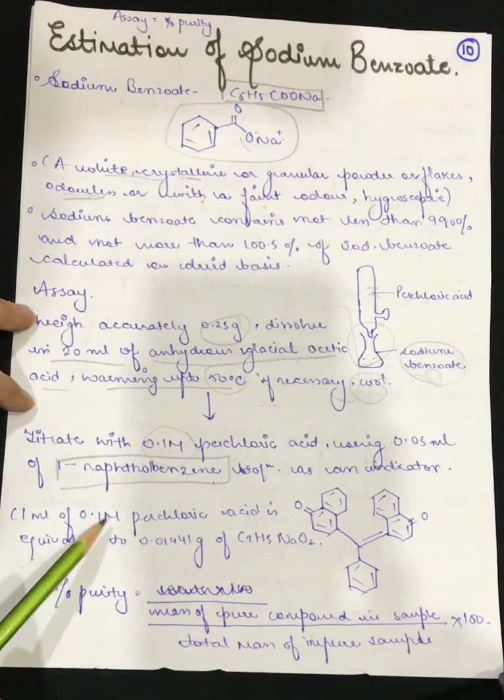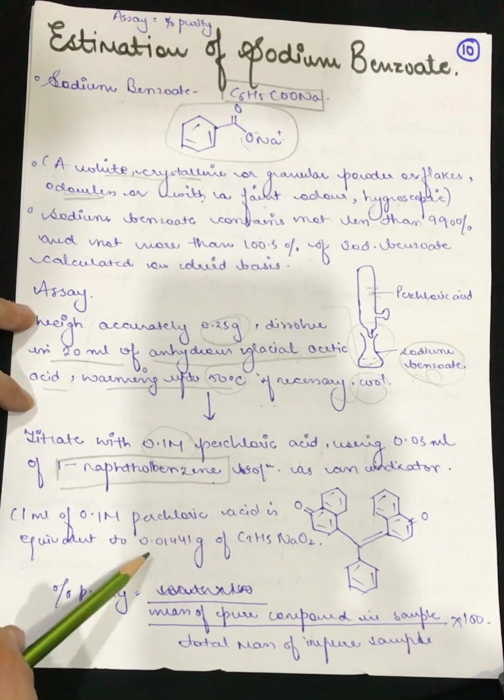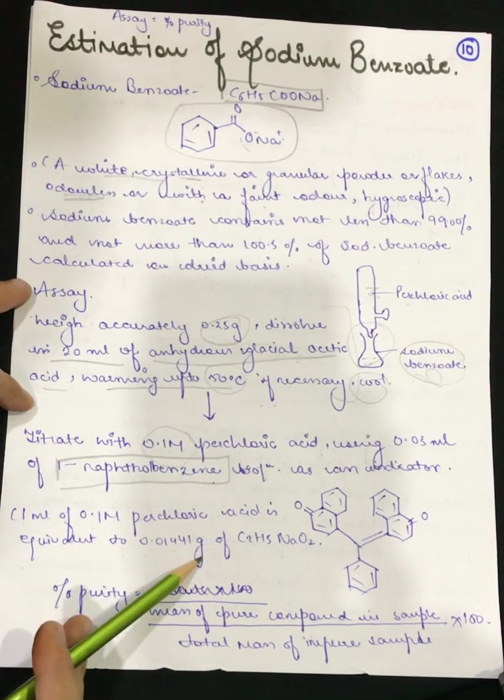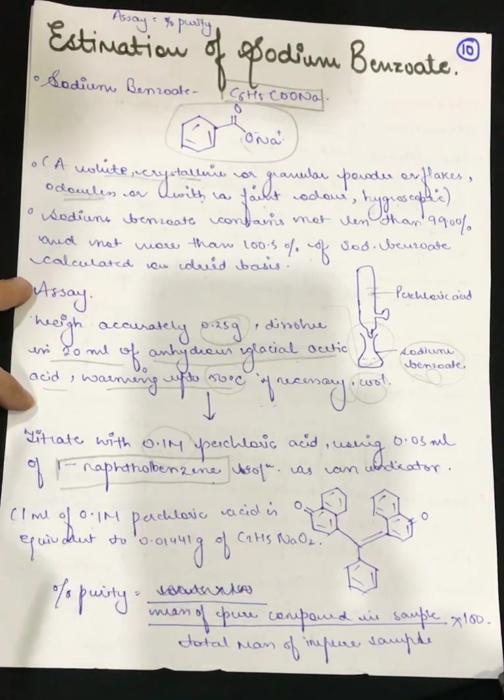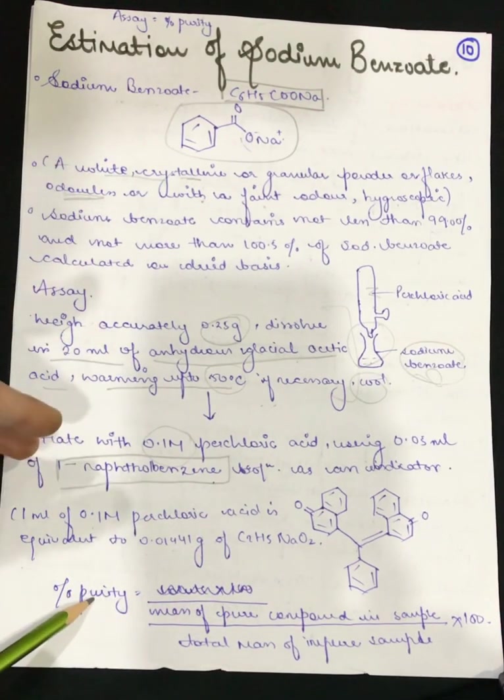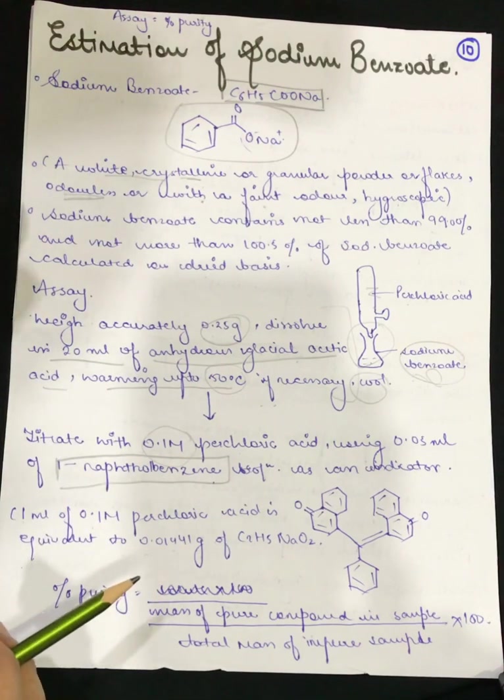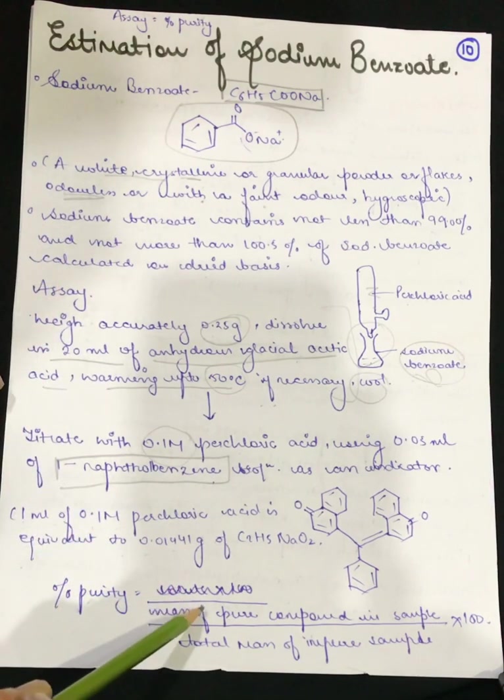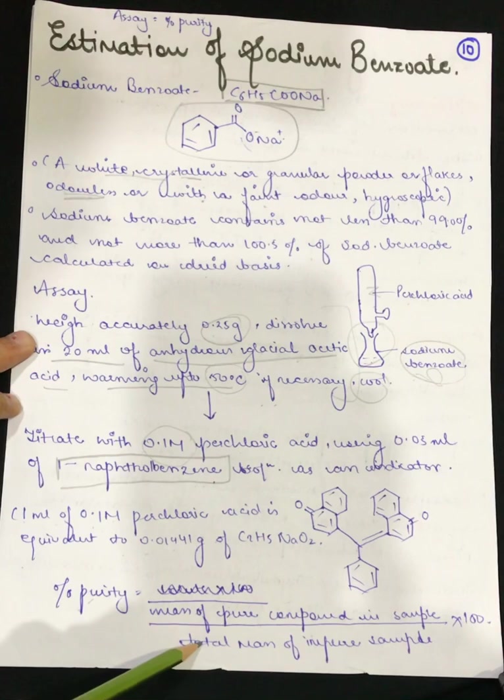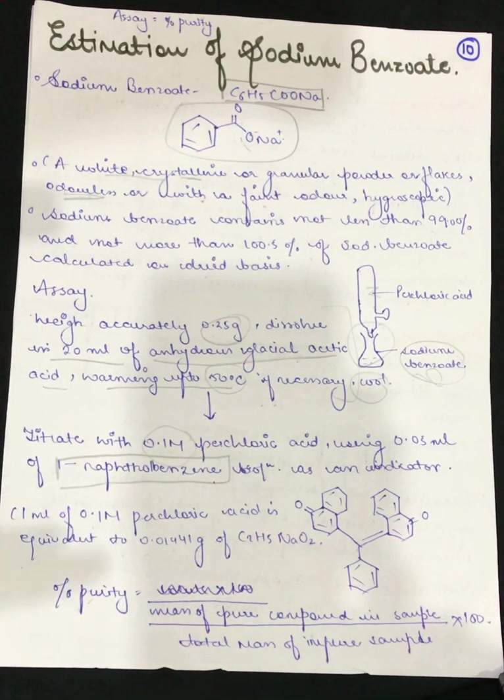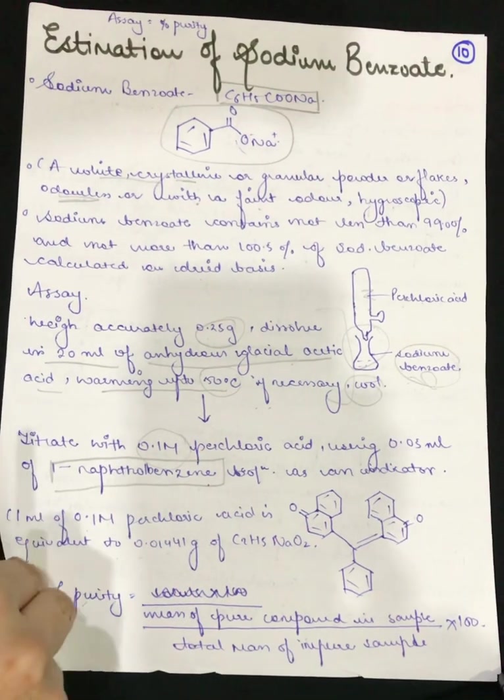Now, 1 ml of 0.1 molar perchloric acid is equivalent to 0.01441 gram of sodium benzoate. For percent purity, we will calculate: mass of pure compound in sample divided by total mass of impure sample times 100. This is the method to find out the percentage purity.